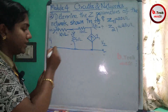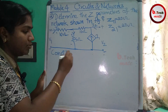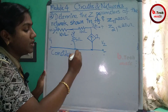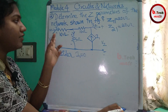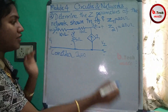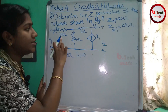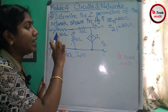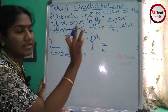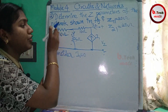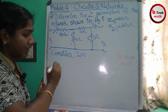Now for the second case: open the input port. We have to open the input port here. I set the input current I1 to 0, so the current through that branch is turned to 0 and that branch is effectively removed from the circuit.